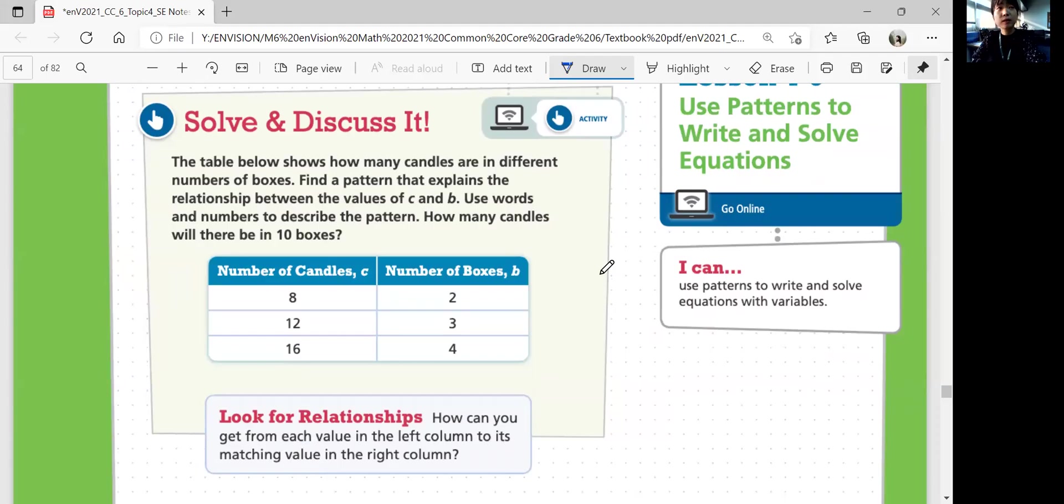Let's look at the patterns. Number of candles C increases from 8 to 12, 12 to 16. Number of boxes B increases from 2 to 3 to 4. How can you get from each value in the left column to its matching value in the right column? So do you see any patterns? How are the numbers related?